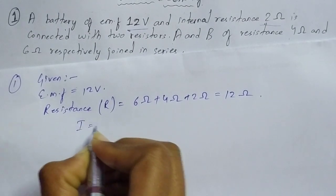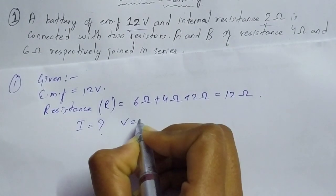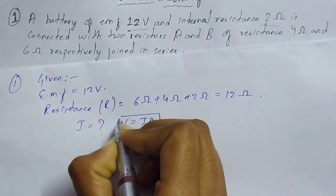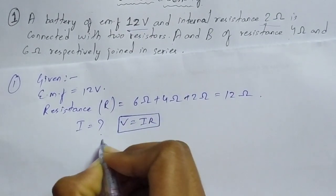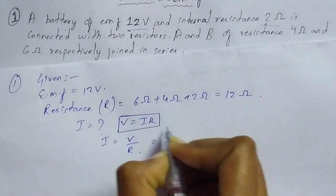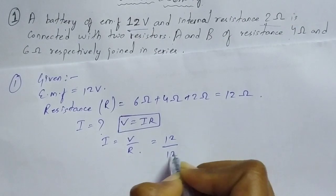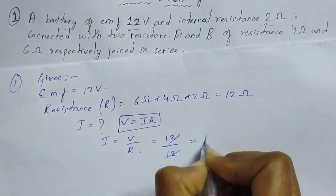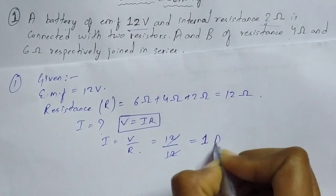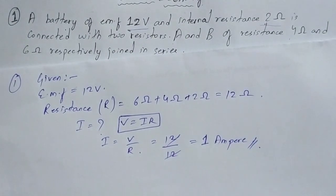Now we find the current. Current is not given, so we use the formula V = IR, which gives I = V/R. V is 12 volt and resistance is 12 ohm, so current equals 1. The SI unit of current is ampere, so the current is 1 ampere. That is the answer for the first part.